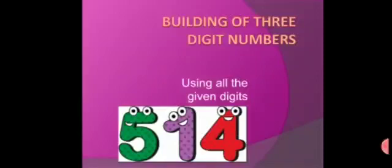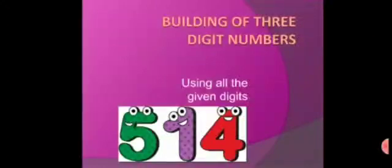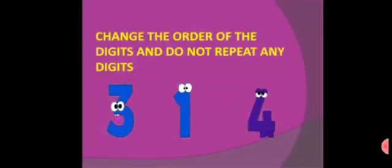Now let's do one more concept: how to build three digit numbers using all the given digits and without repeating them. Let's take one example. Say we have the digits 3, 1 and 4. To build three digit numbers, we just change the order of the digits and we do not repeat any digits. We are just going to change the order of the given digits. It's very simple.